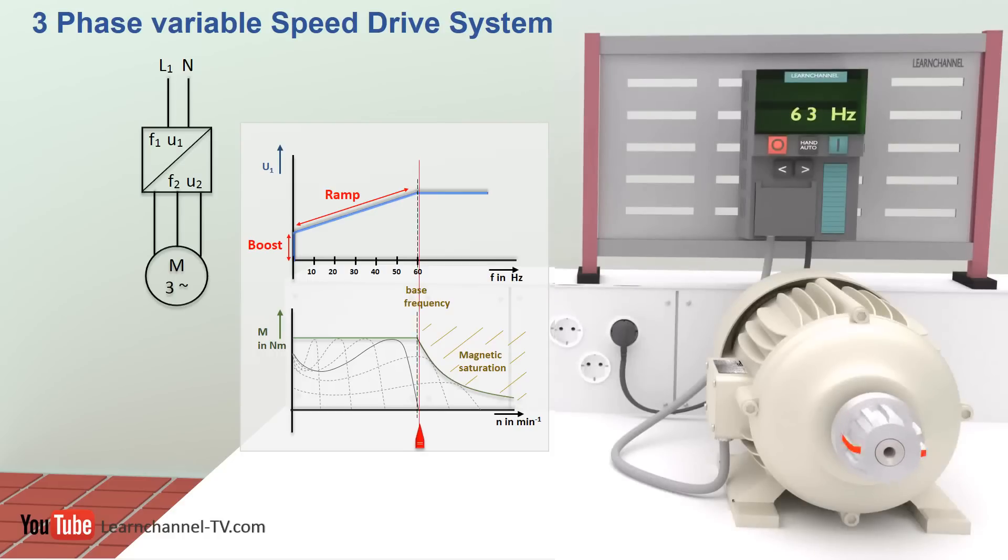The base or edge frequency is achieved when the voltage supplied to the motor reaches the mains supply voltage. Raising the frequency above the edge frequency leads to magnetic saturation which cannot be compensated anymore. As a result, the torque of the motor decreases.